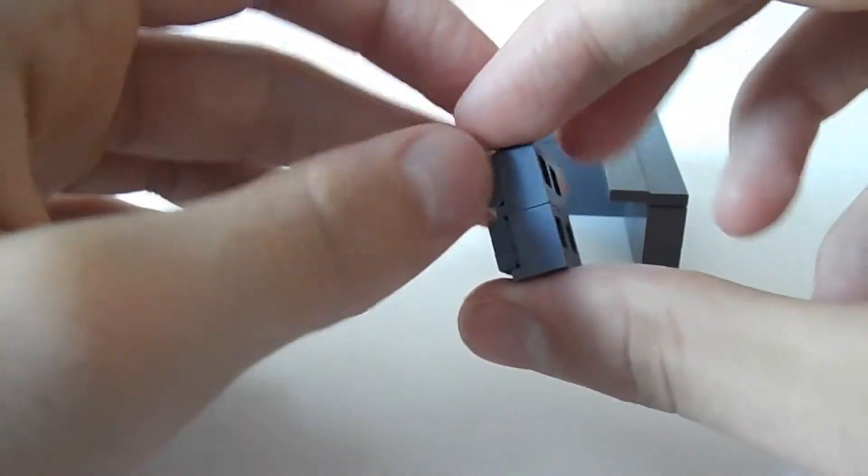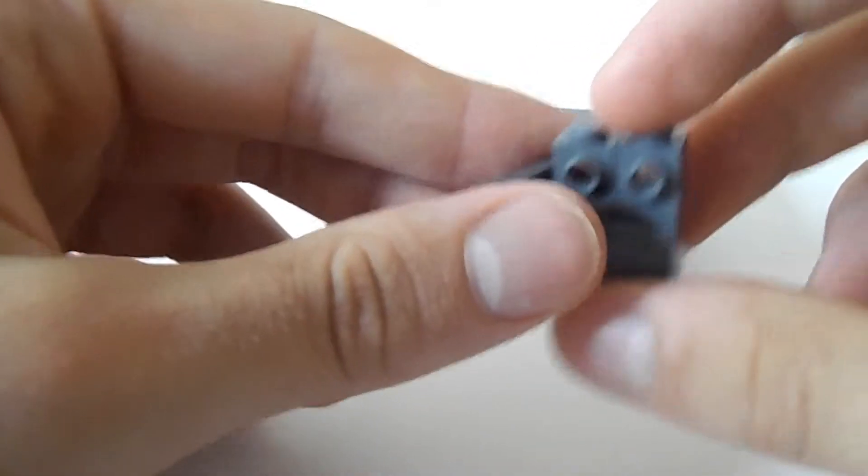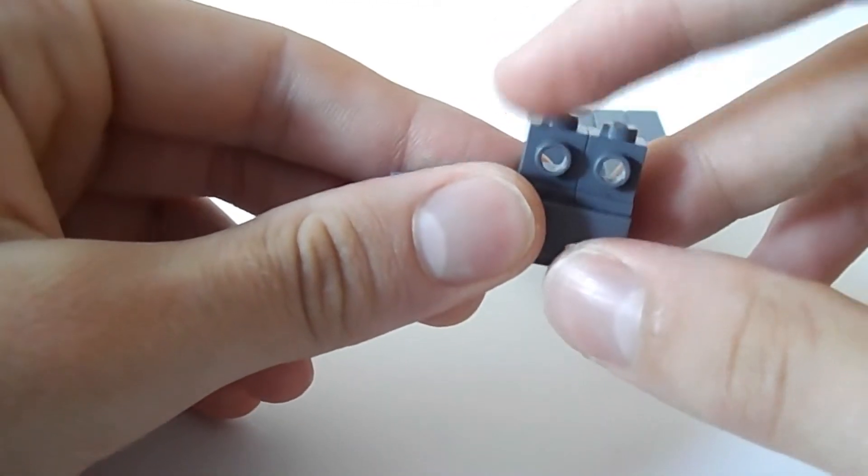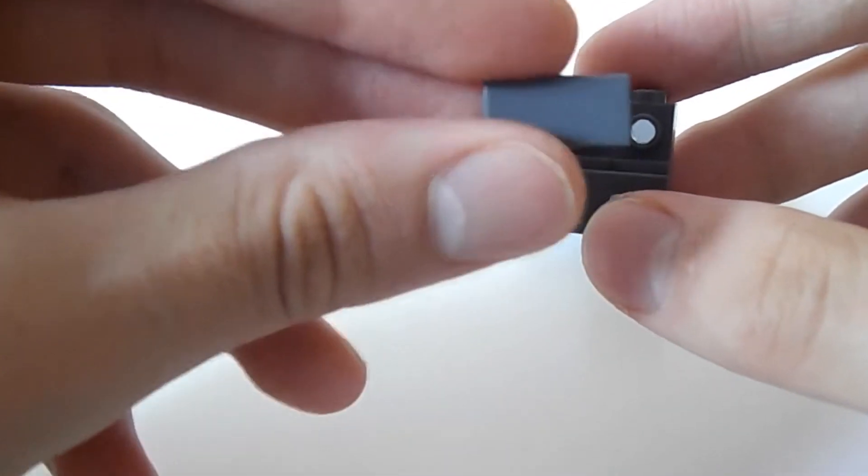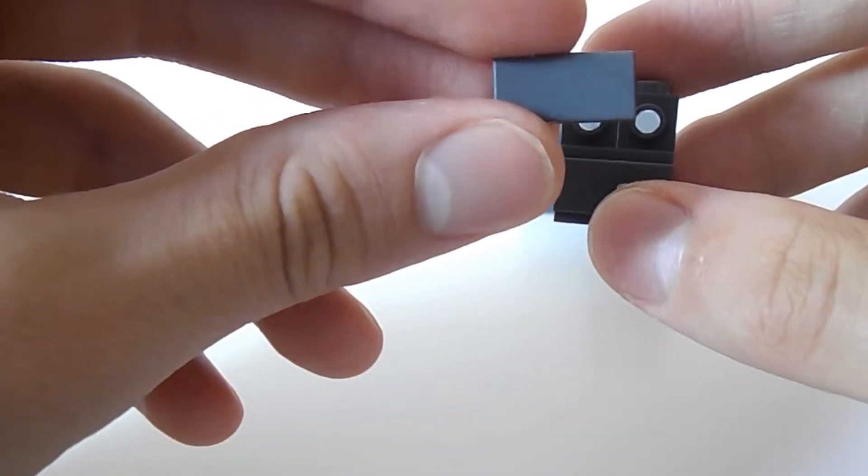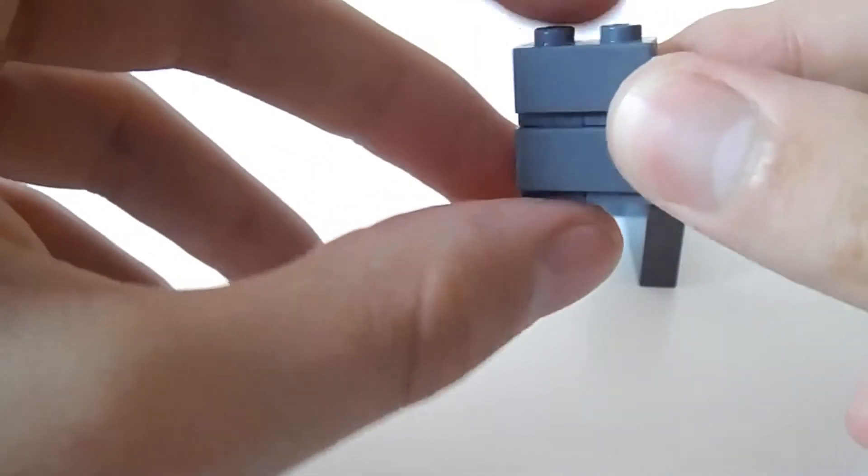I'm going to show you how to make the drawers. It's pretty simple actually. You just have to use two of these and a plate - a two-by-one plate - and just put it here. It's pretty easy.